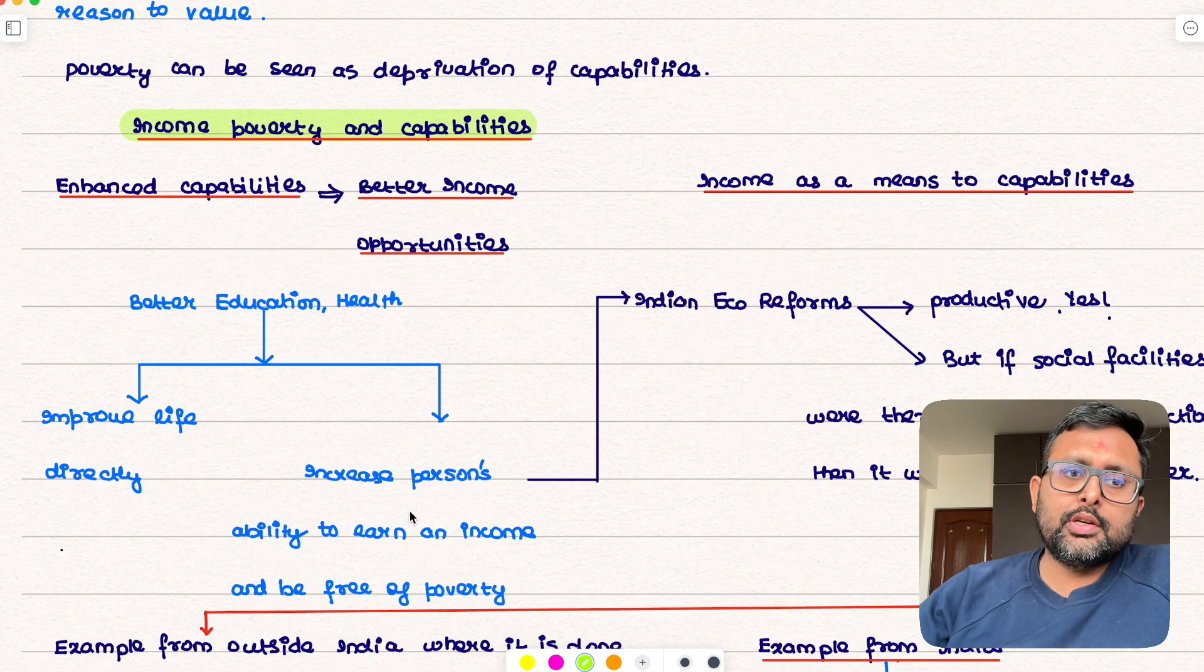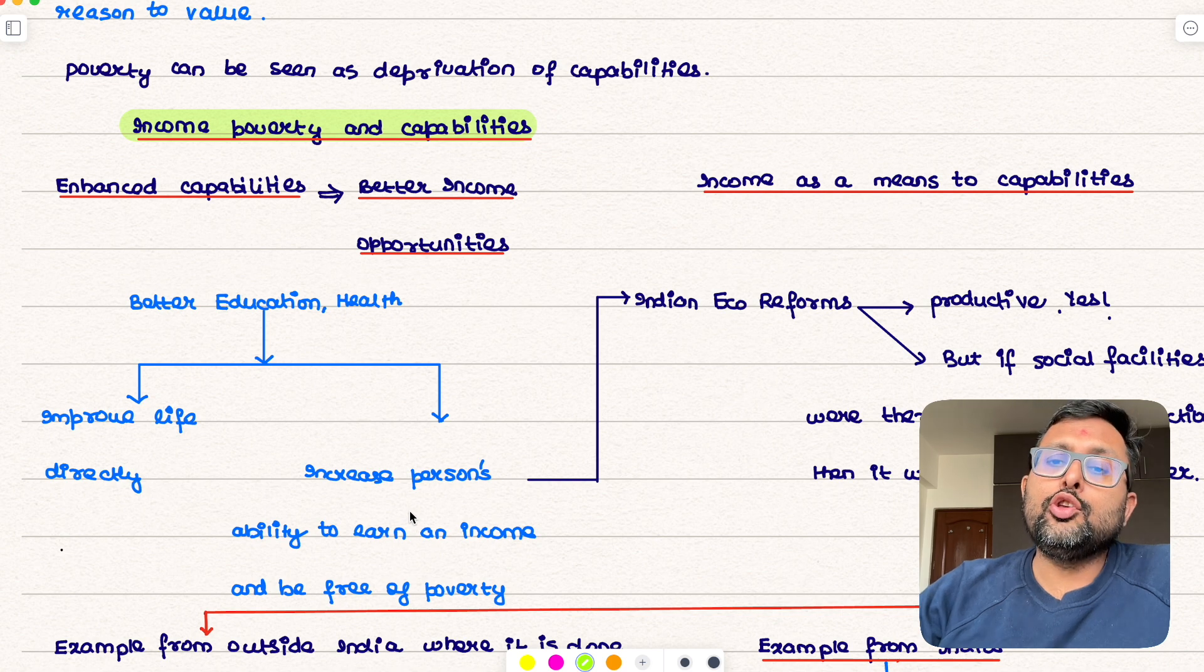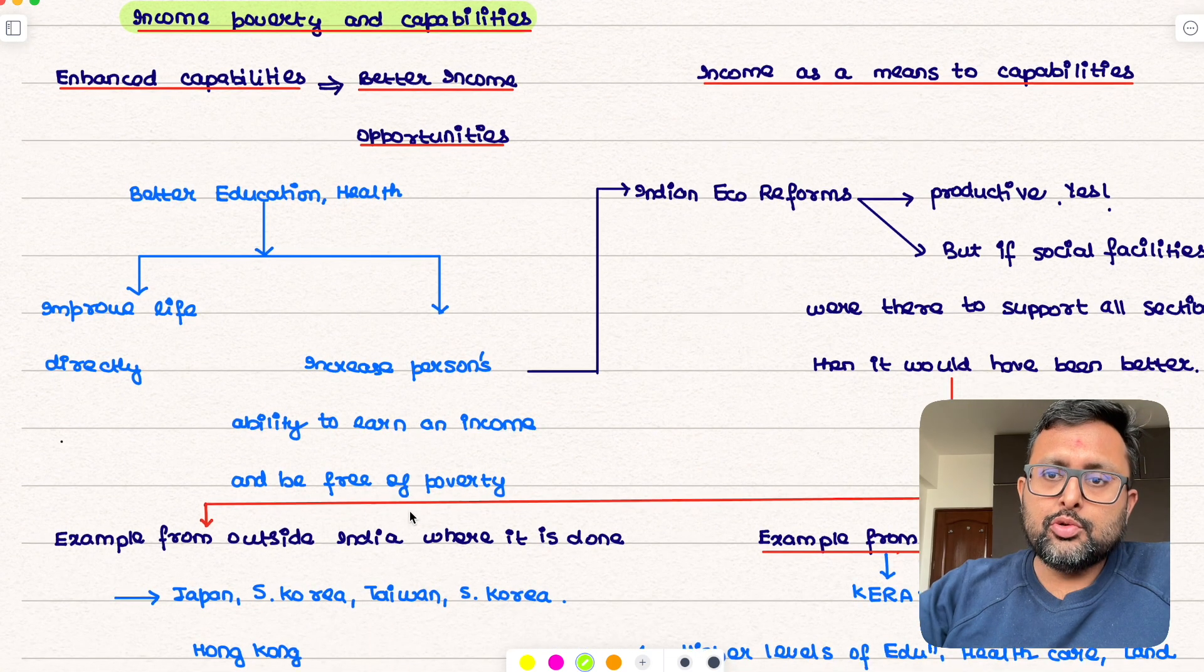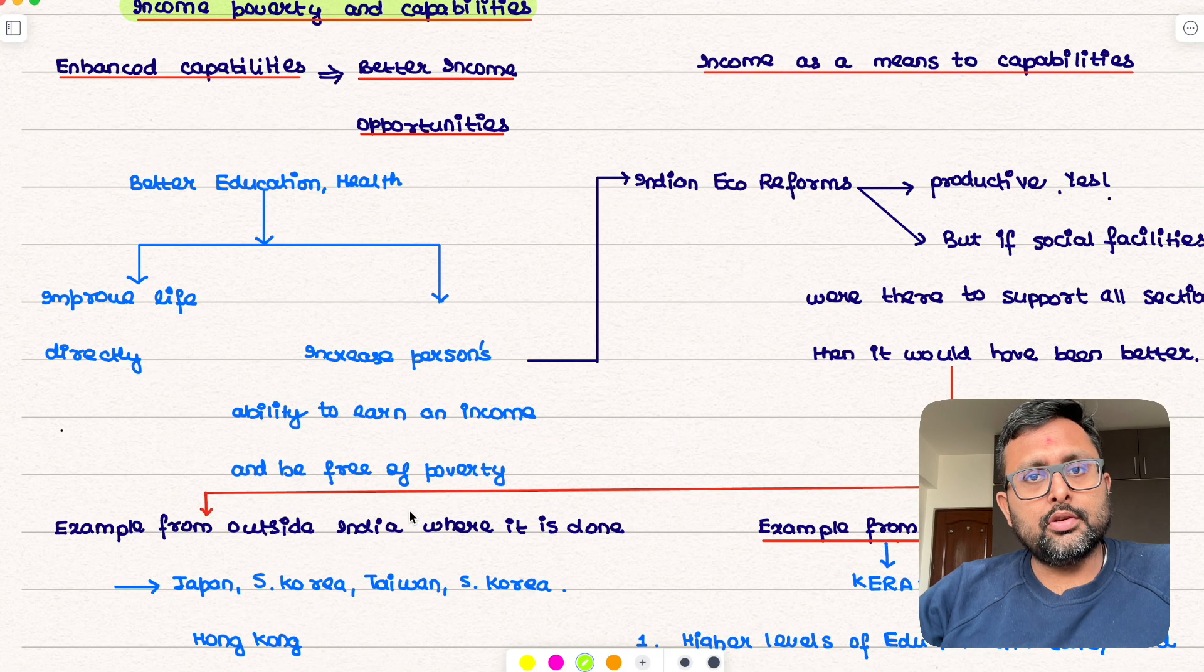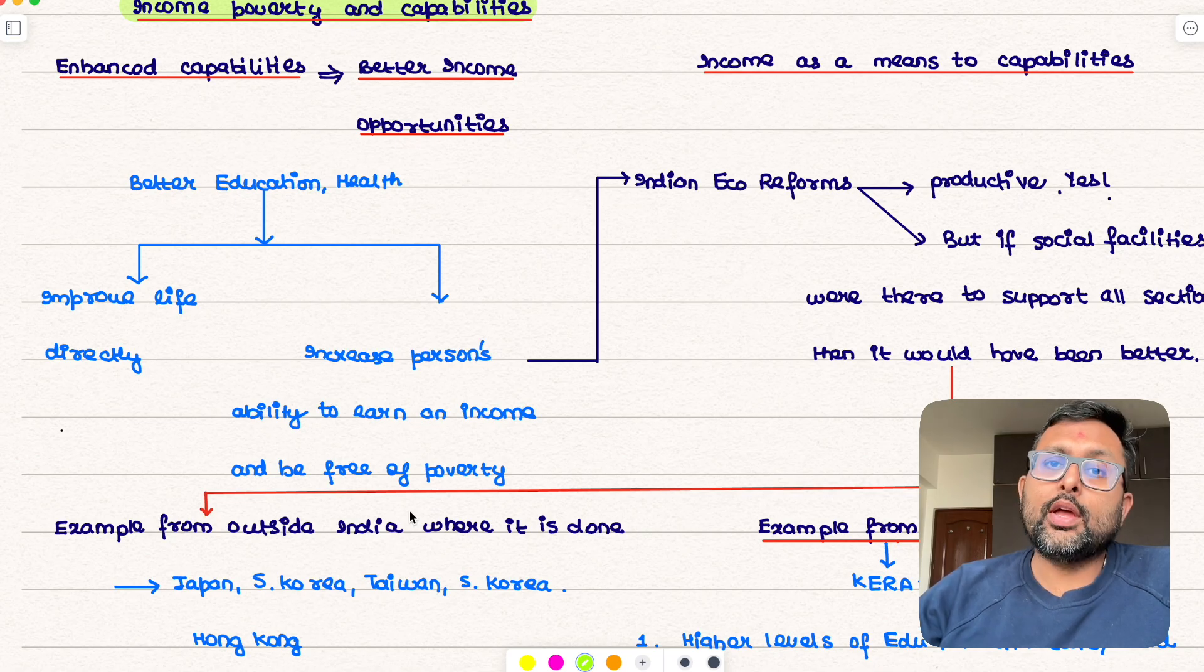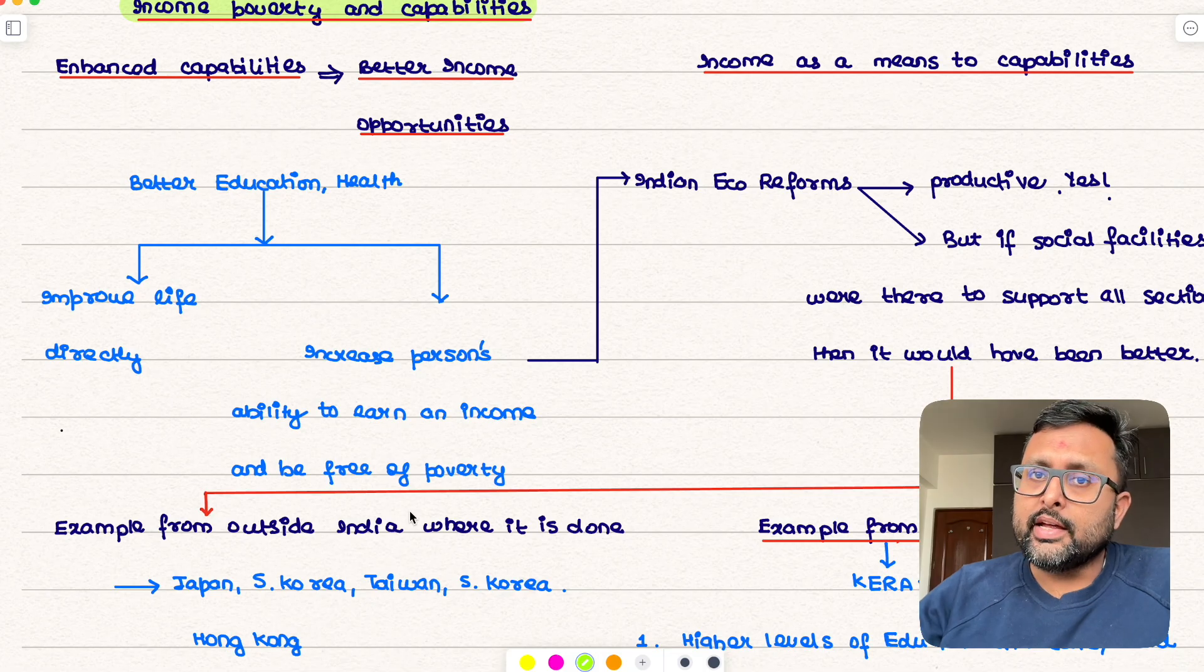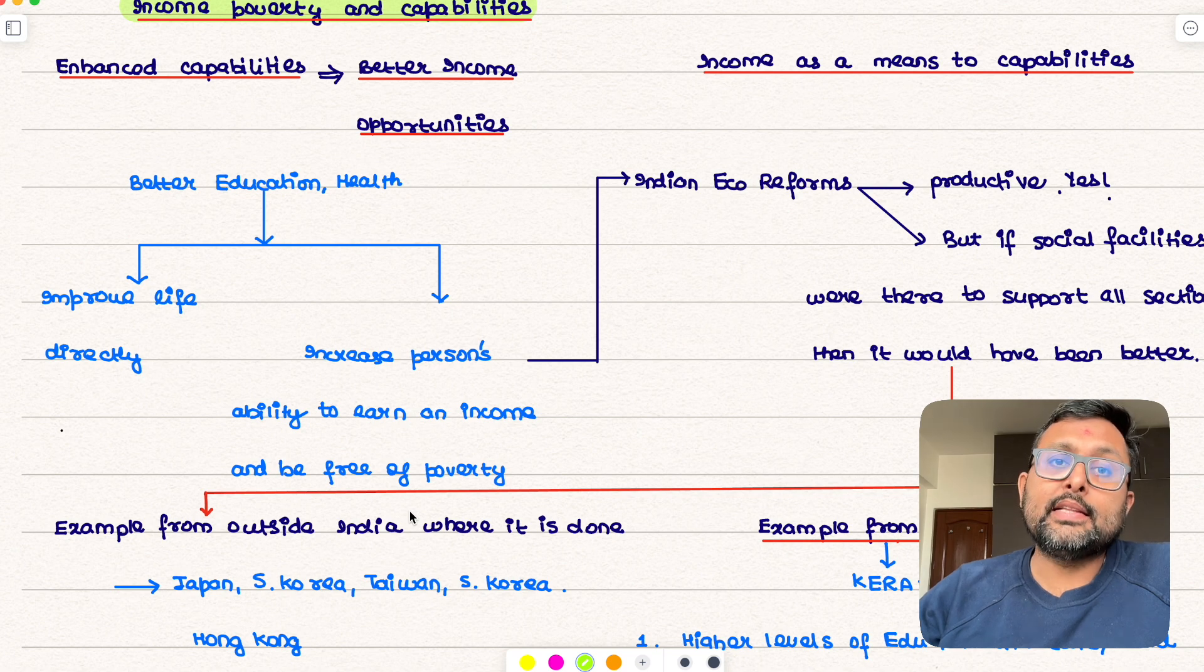So better education, better health are going to improve your life directly, undoubtedly this is true. But this is also going to help in the ability of the individual to have more income. If you have better education you can be employed in a better job. If you have good health you can work harder and hence your income capacity is going to increase. One example where your ability to earn can increase if we can provide you with enhanced capabilities.